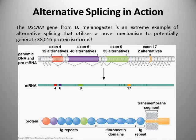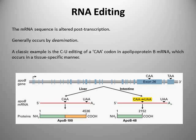That's alternative splicing. We're almost ready to get the mRNA out of the nucleus. There's one other thing that can occur to mRNA in rare occasions before it gets exported into the cytoplasm — a phenomenon known as RNA editing. This generally occurs by a process called deamination, where you can get conversion of nucleotides to other nucleotides via a chemical event, and it's an example of how the mRNA sequence can actually be altered post-transcription.